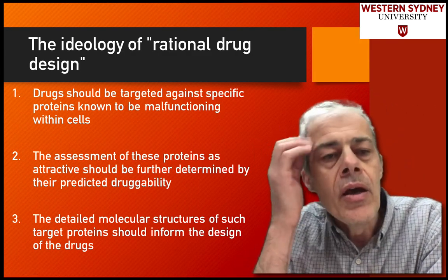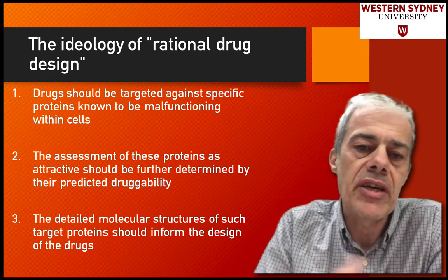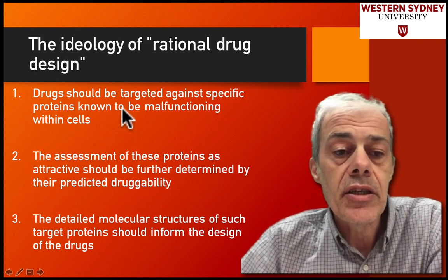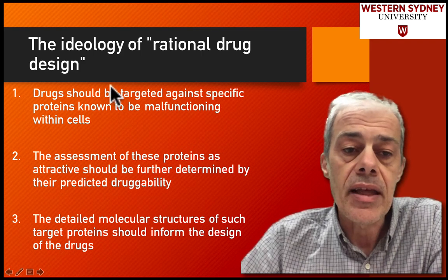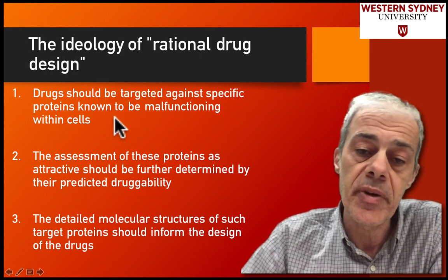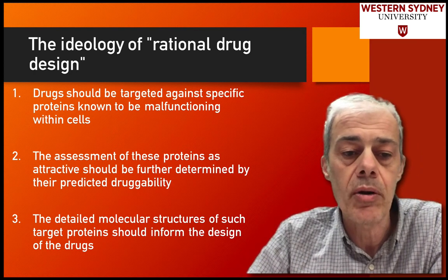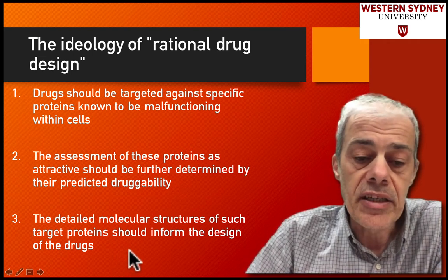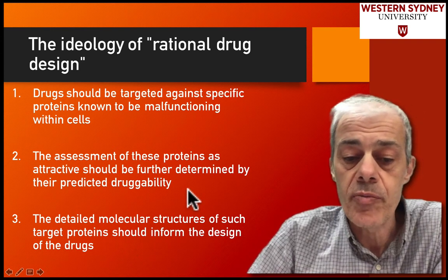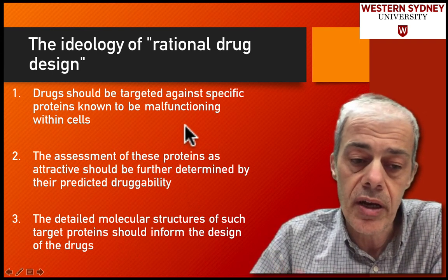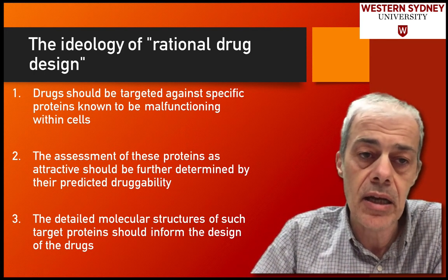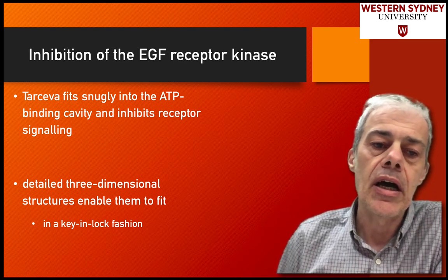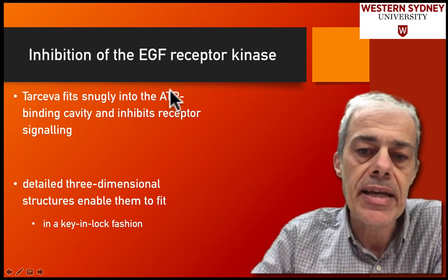Rational drug design, as opposed to serendipitous discovery, means that if you understand something you can design a drug for it. You need to know that the target is malfunctioning in the cell — it should be an oncoprotein driving growth that you want to knock out. You also need to assess whether its function is druggable, and ideally you need the detailed molecular structure of the protein so you can design on the computer screen a drug that fits like a lock and key into the catalytic cleft. For example, the inhibitor of the EGF receptor kinase, called Tarceva, fits snugly into the ATP binding cavity.